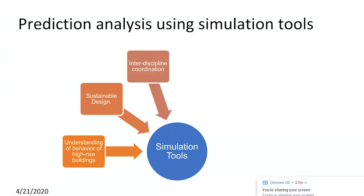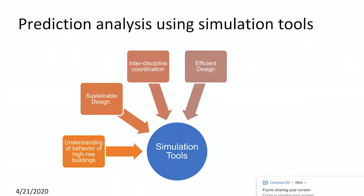Interdisciplinary coordination is also critical — for example, in high-rise buildings, electrical and mechanical elements can conflict in the same location, requiring relocation of ducts or conduits to ensure no clashes and sufficient clearance. This coordination plays a major role when using simulation-based prediction tools and helps promote efficient design.